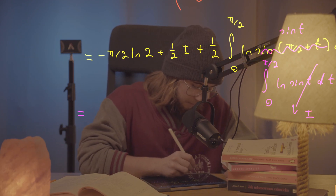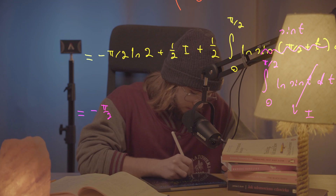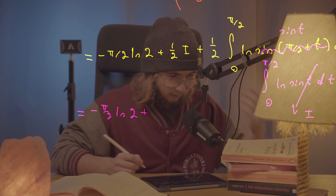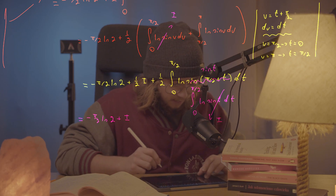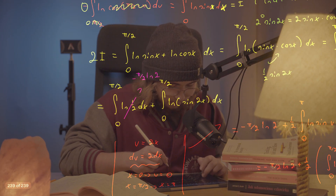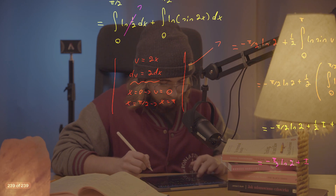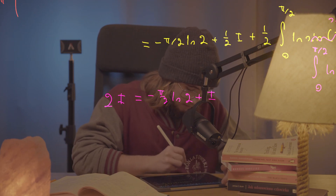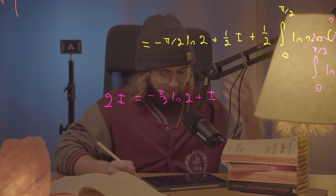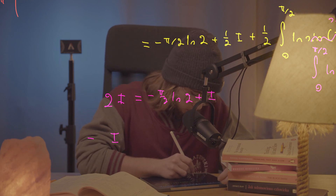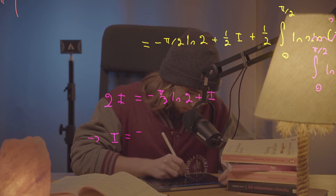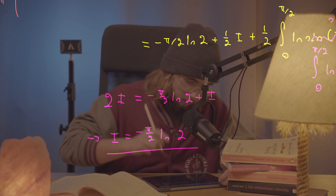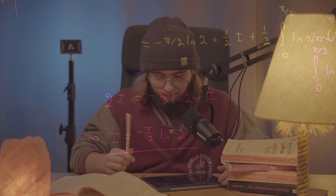So we get that this entire expression is just equal to negative π/2 ln 2 plus (1/2)I plus (1/2)I, which is a whole I. And what was it equal to at the beginning? Double I. So we have that 2I equals negative π/2 ln 2 plus I, and therefore I equals negative π/2 times the natural log of 2. And we get our answer.